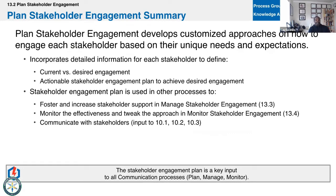So current versus desired engagement — that's what we're looking at, that's what this process is about. We need an actionable plan so that we can achieve that desired engagement. That engagement level may be that when people come to meetings, most of the time everybody has their laptop and they're typing in, and then when you ask a question they look up, and sometimes they don't know and we have to repeat the question. How do we engage stakeholders so that that doesn't happen? There's a myriad of scenarios we go through within our meetings.